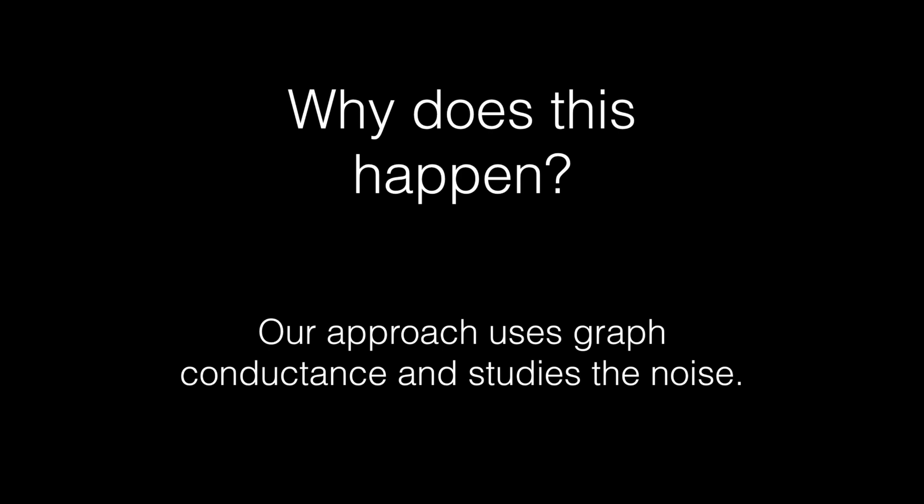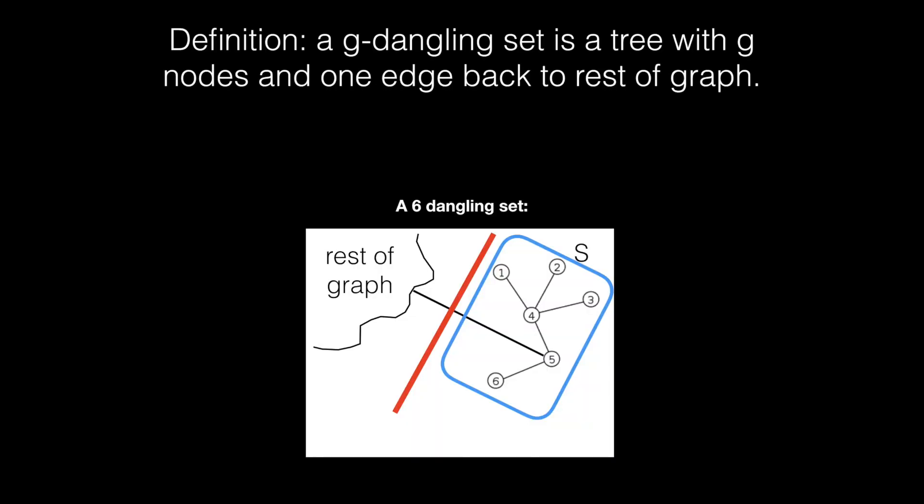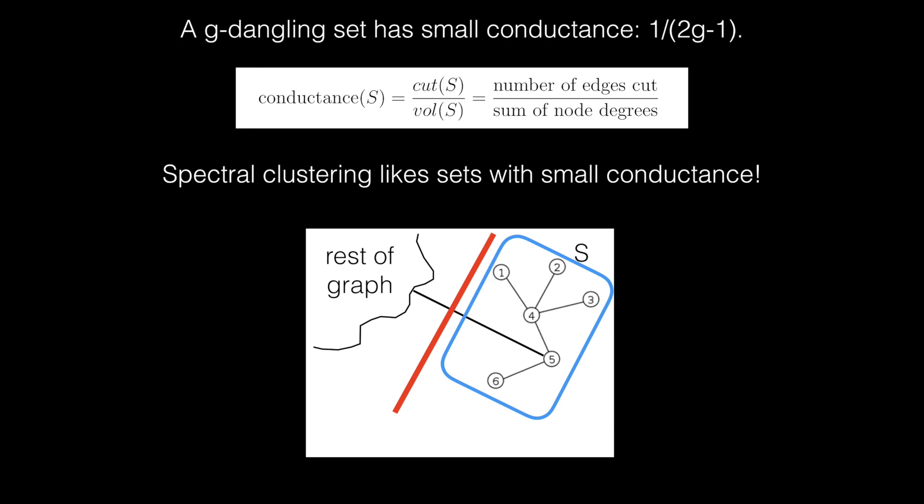So why does this happen? Our approach uses graph conductance and studies the noise to try and make sense of this phenomenon. A key notion is a G-dangling set. Here's a six-dangling set. It has six nodes and it connects back to the graph with one edge. These things have super small conductance. And Spectral Clustering likes sets with small conductance. So Spectral Clustering is likely to find this set.